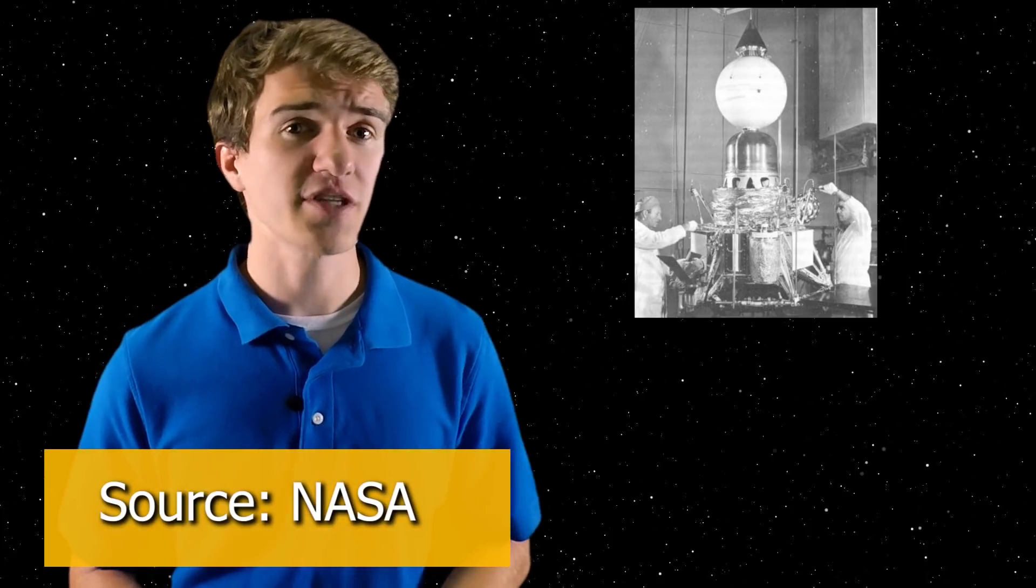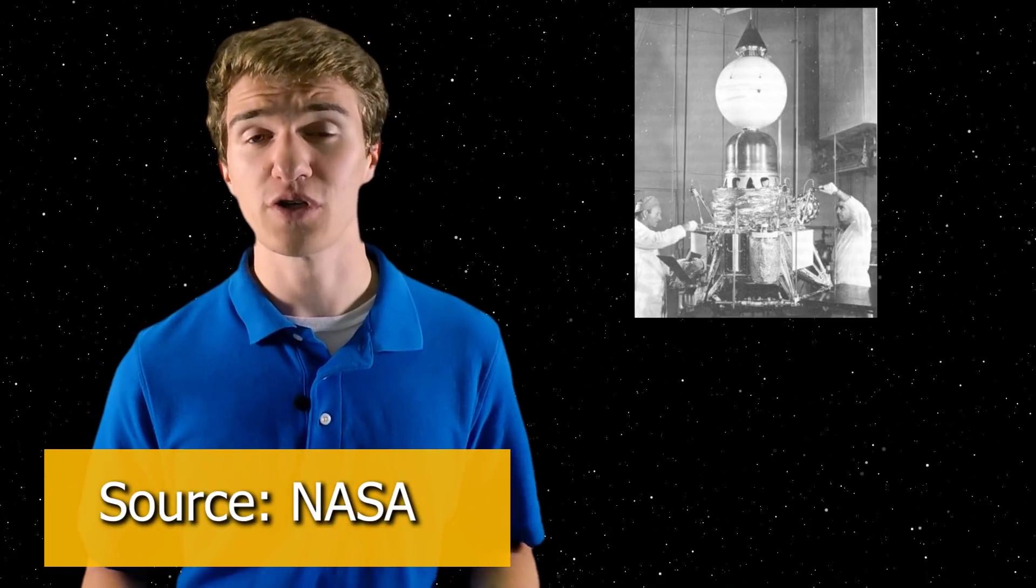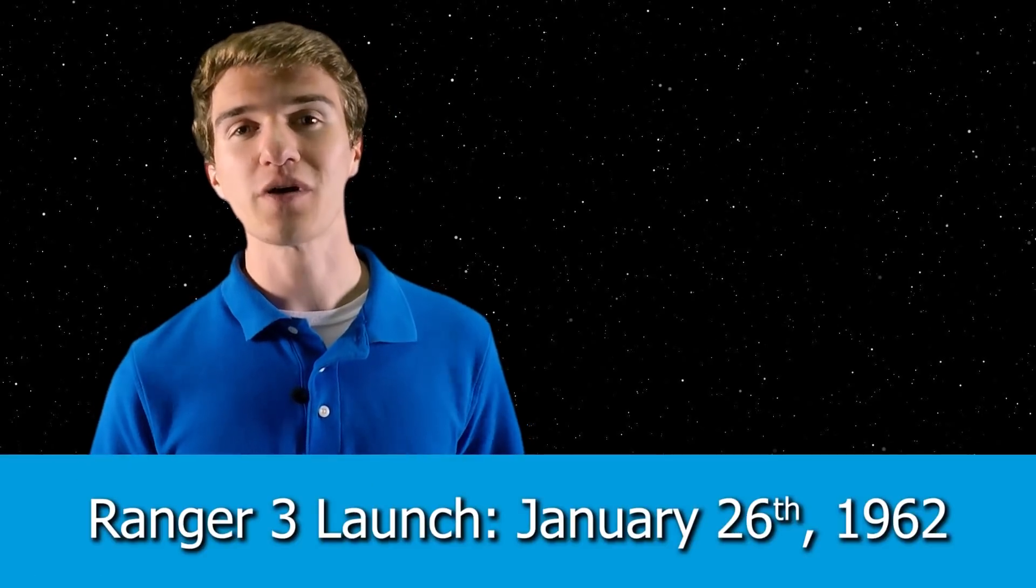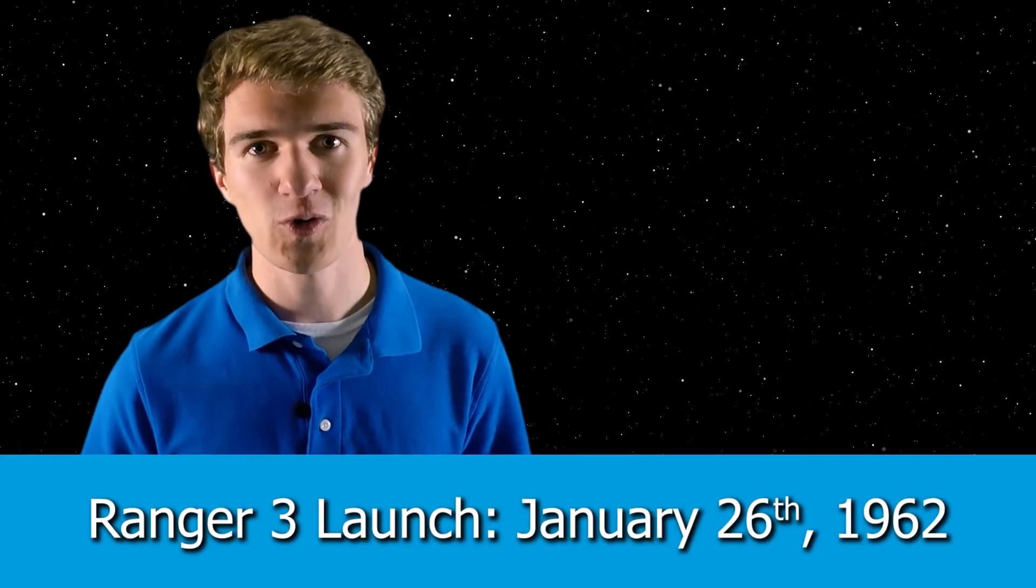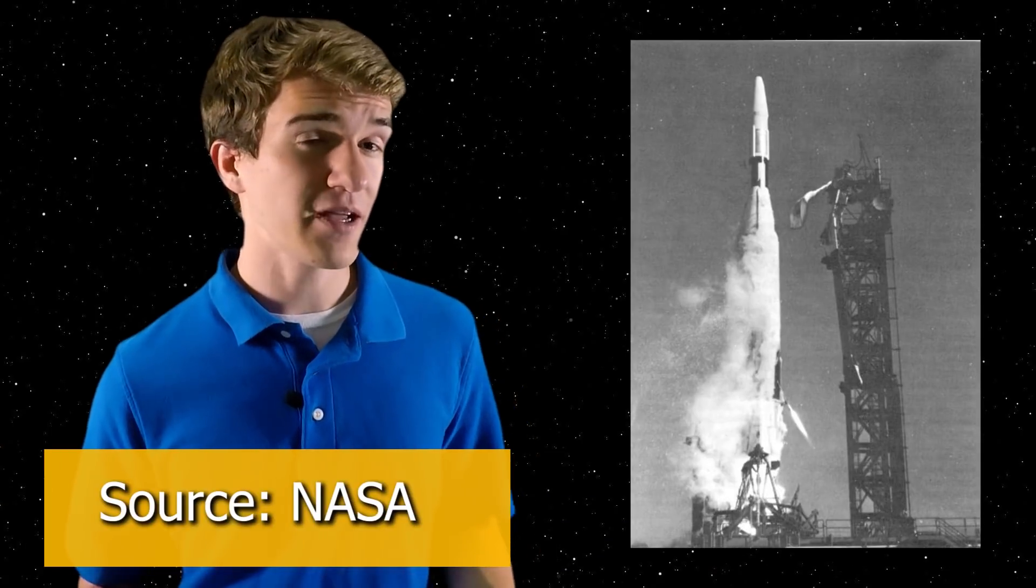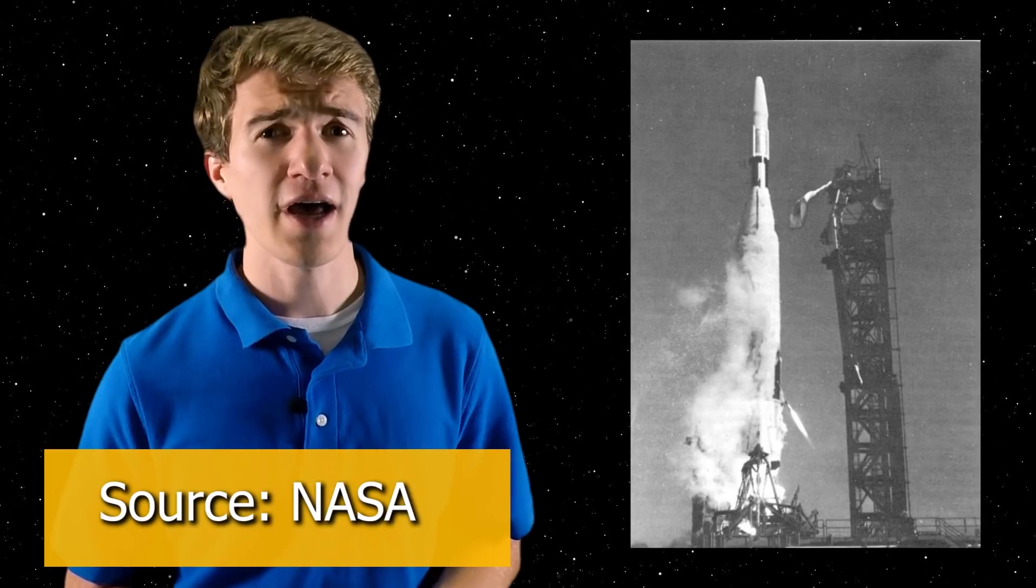Just a couple months following the Ranger 2 failure, Ranger 3 was ready to go. And this was the very first of the Ranger missions to actually go to the moon. Because on January 26th of 1962, the spacecraft launched on the same rocket as before, and instead of it stopping during the orbital insertion burn, about a minute into the flight, they lost fine control on the rocket, and therefore it continued to burn until it ran out of all of its fuel. So this is quite the opposite. Instead of not getting enough speed, it got way too much speed, and they weren't able to fix it.